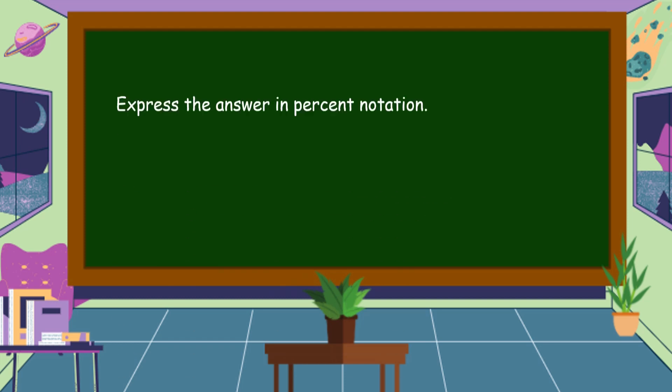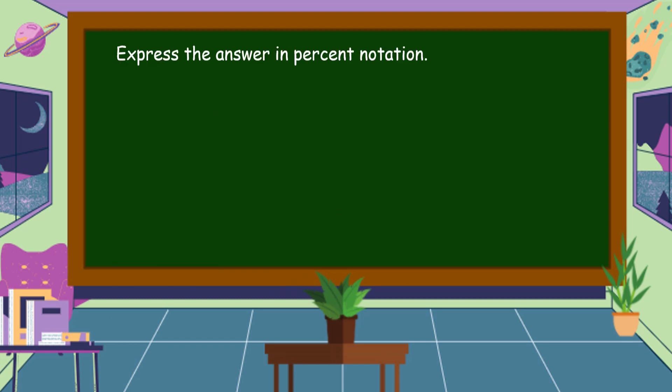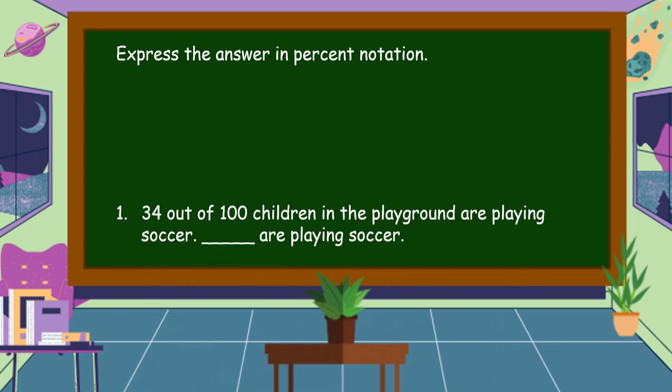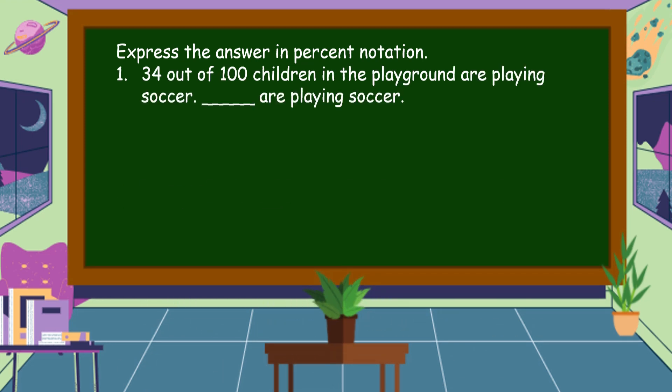Let's express the answers in percent notation. Number one: 34 out of 100 children in the playground are playing soccer. How many percent are playing soccer? 34 out of 100 is equal to 34 percent.